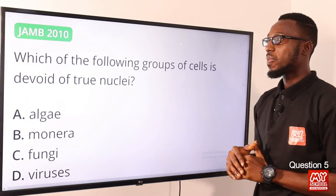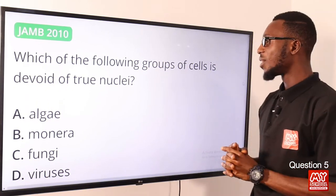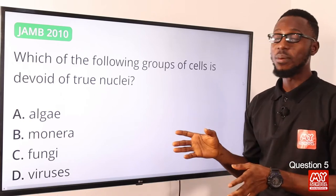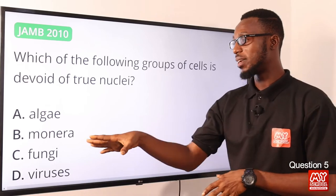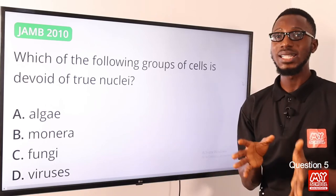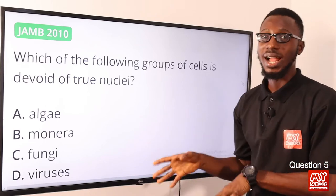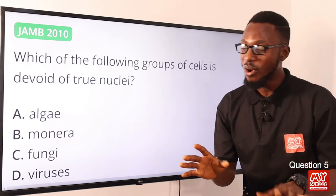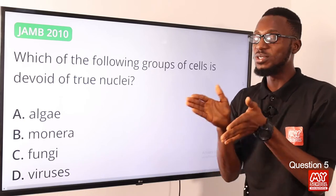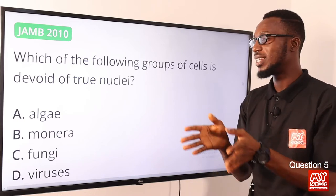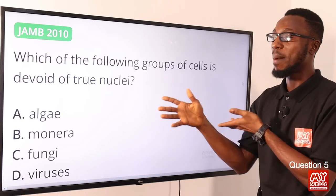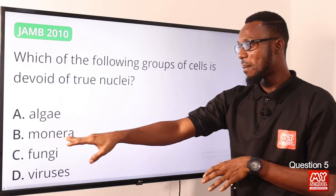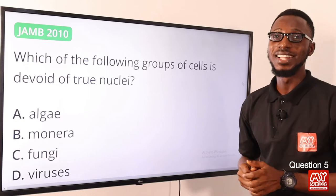Question 5: Which of the following groups of cells is devoid of true nuclei? The correct option is option B, Monera. When you talk about bacteria and blue-green algae, they are the simplest living organisms. Their cell structure is simple, with no definite nucleus — the chromosome just lies freely in a particular part of the cell. So option B is the right option.